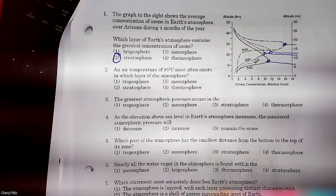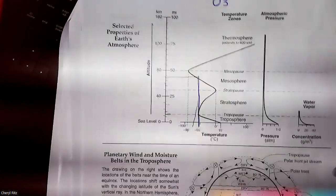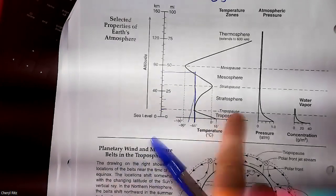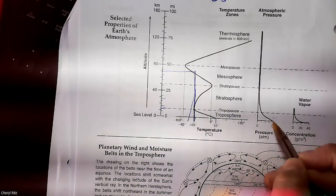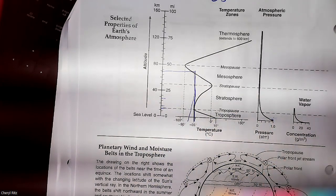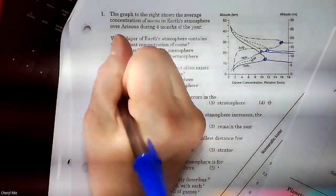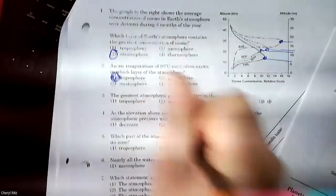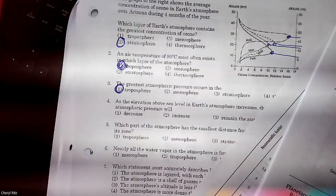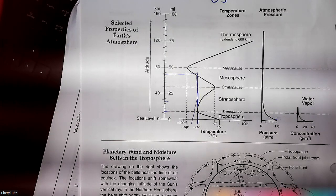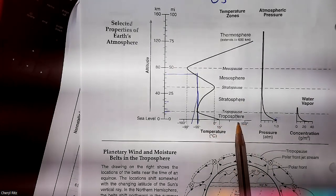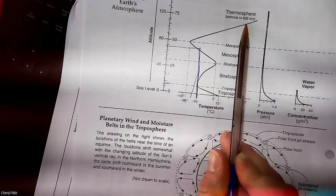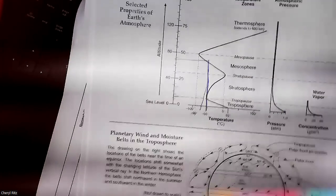The greatest amount of pressure — what layer? The troposphere. Pressure is on the x-axis this time, so the biggest pressure, the one farthest to the right, is 1 — and that's in the troposphere. An air temperature of 95 degrees Celsius most often exists in the thermosphere. 95 is not on there, but if this is 0 and this is 100, then 95 is pretty close to 100 — go up till you hit the line, and the only place the temperature gets near 95 is the thermosphere — answer 4.